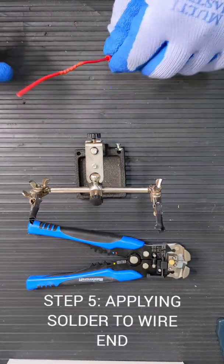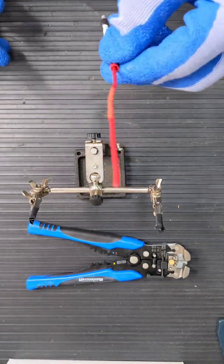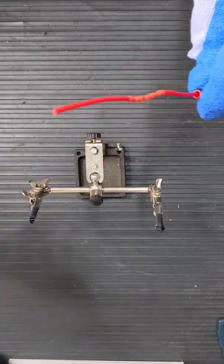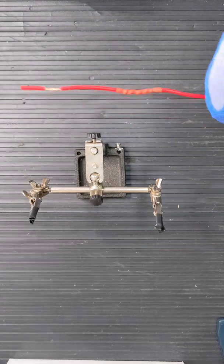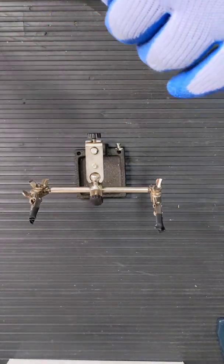The next step is we're going to strip about a centimeter off the end, and we're just going to tin it. So basically just applying the solder to the end.